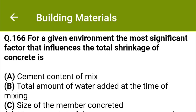For a given environment, the most significant factor that influences the total shrinkage of concrete is: option A cement content of mix, option B total amount of water added at the time of mixing, option C size of the member concreted, option D maximum size of coarse aggregate used. The correct answer is option B: total amount of water added at the time of mixing.